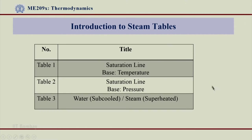When we look at steam tables, the book has three tables: table number 1, table number 2, and table number 3. Table number 1 and 2 actually talk about the saturation line only — the LV line, the liquid-vapor saturation line. The only difference is they have different bases for comparison; for example, one uses temperature as the base and the other uses pressure.